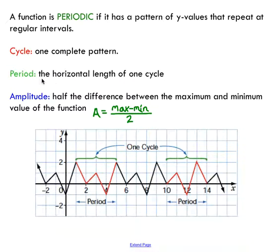A period is the horizontal length of one cycle. So if you move from one to five here, that's the length horizontally. So we call that the period.